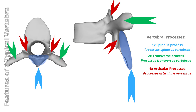The spinous process protrudes posteriorly from the junction of the laminae and may vary in size and shape from region to region. They serve as attachment points for muscles and ligaments. Transverse processes project laterally from the vertebral arch and function as attachment points for muscles and ligaments for back and neck movement. Their size and structure vary in different regions.